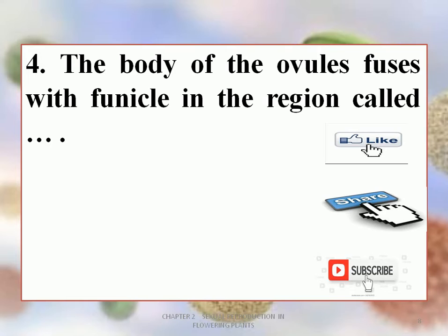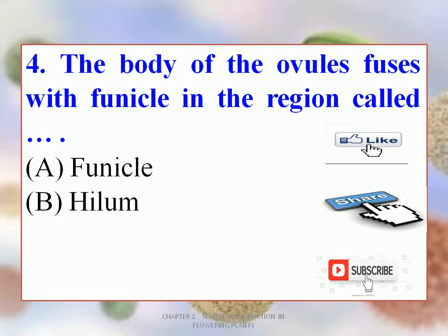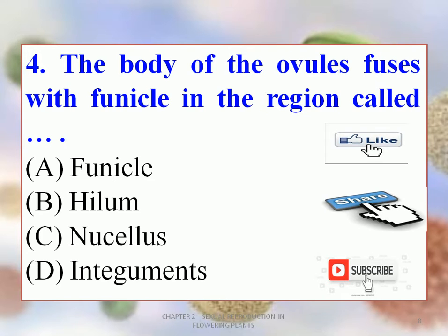Next question: the body of the ovule fuses with the funicle in the region called dash. Options are A. Funicle, B. Hilum, C. Nucleus, D. Integuments. The correct option is B — Hilum. The body of the ovule fuses with the funicle in the region called the hilum.